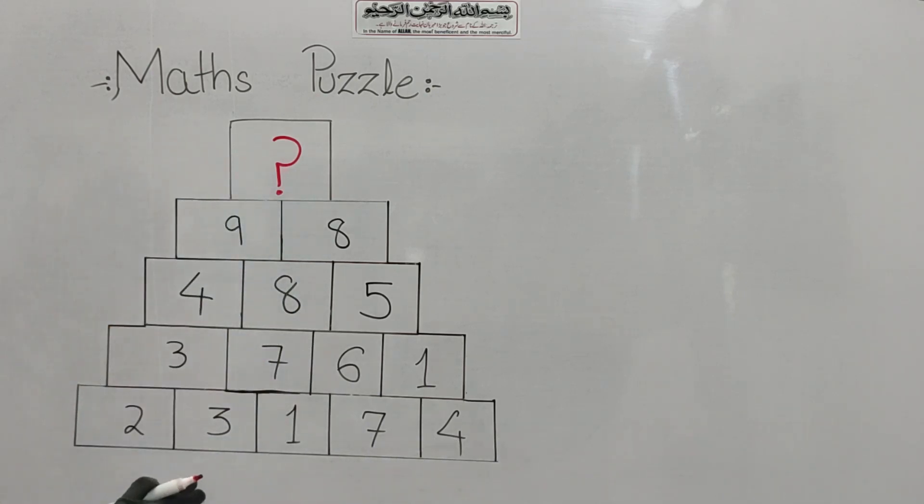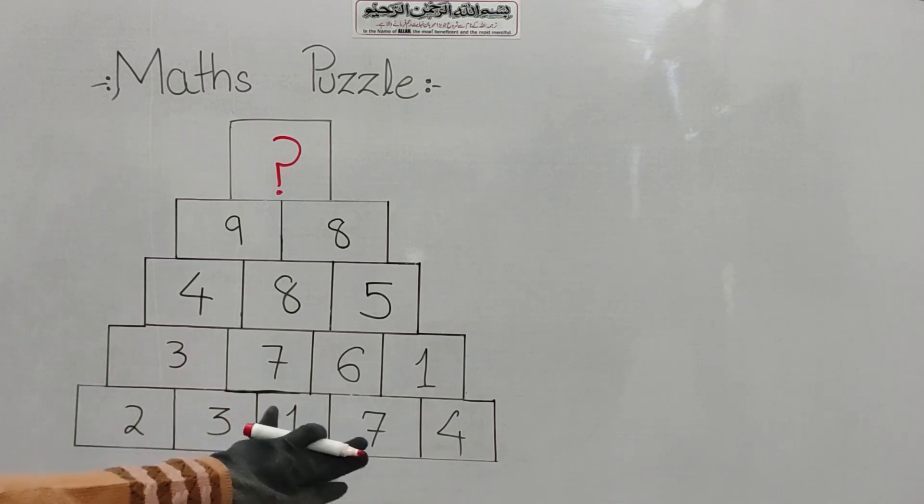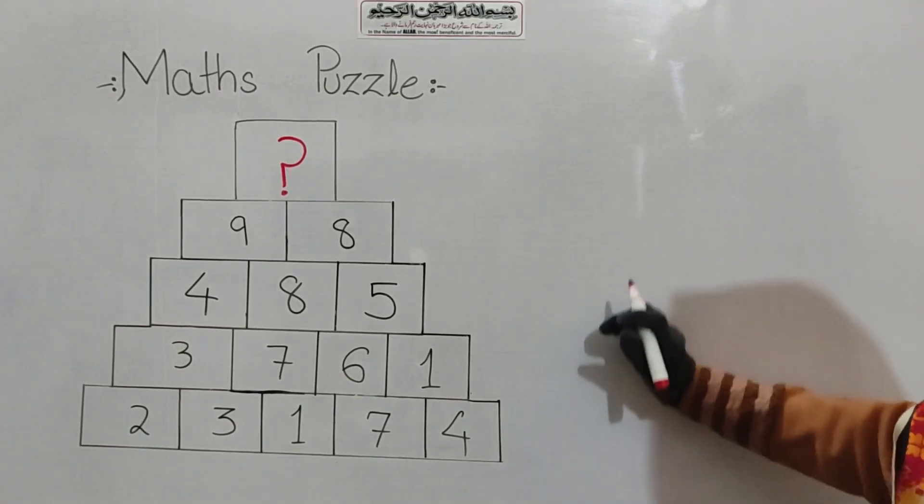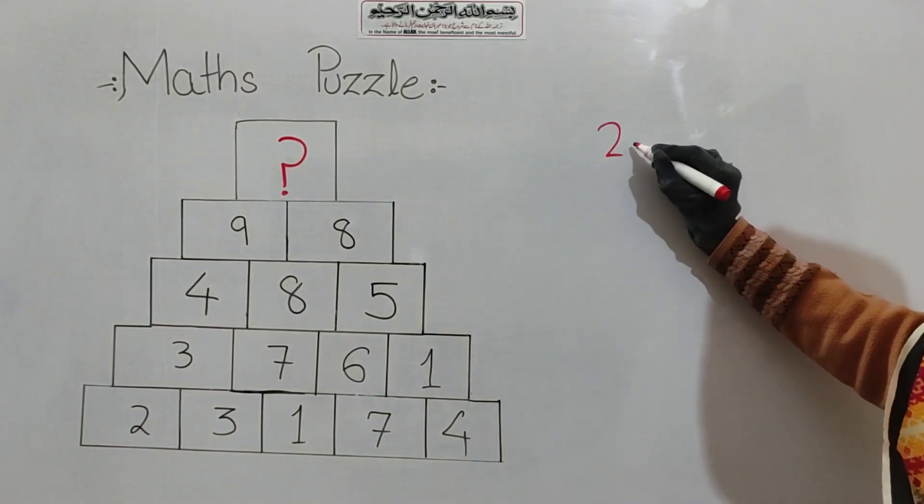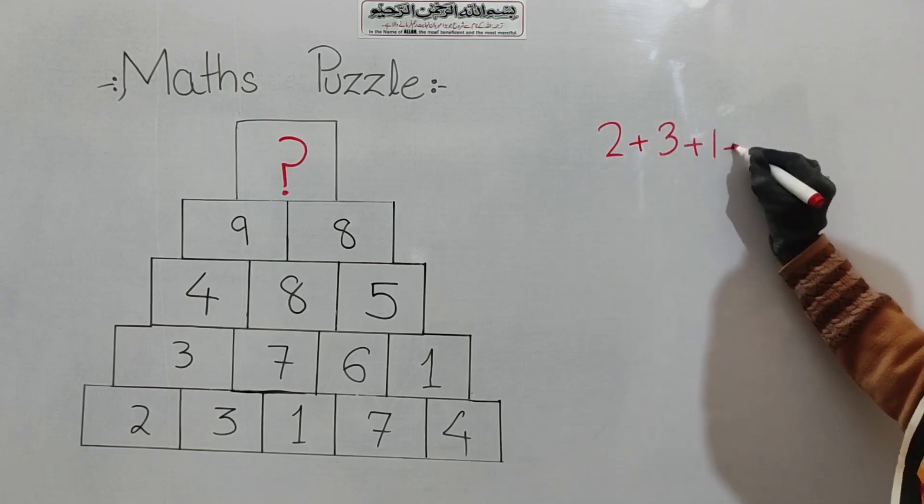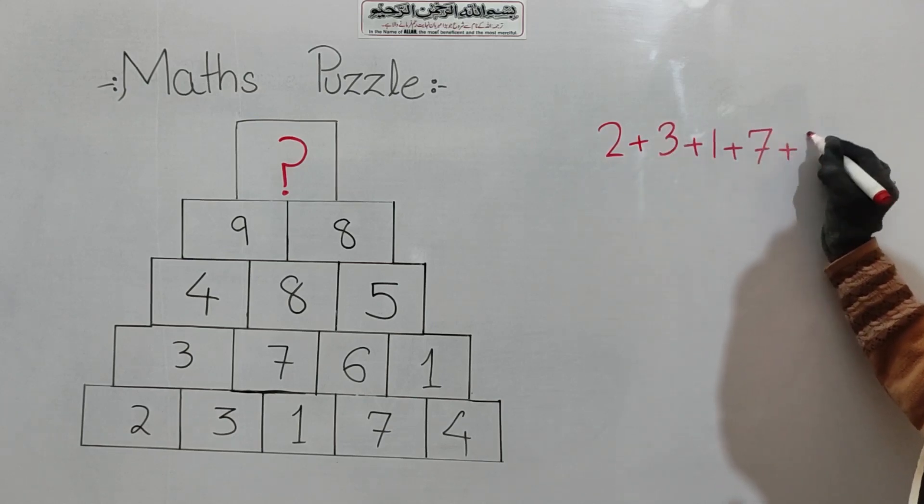So, first of all, let's see if there is multiplication. But if we do all these numbers, there is no number we have. So, let's do the easy operation. If I start from here: 2, 3, 1, 7, and 4. Let's start the addition: 2 plus 3 is 5, plus 1 is 6, plus 7 is 13, plus 4 is 17.